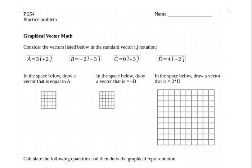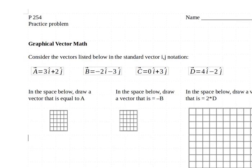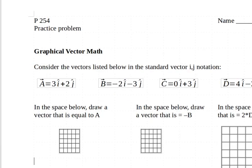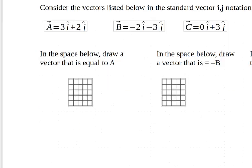I'm going to go ahead and make things a little bit zoomed in just so we can keep track of what's going on and focus on one area at a time. So we have our list of vectors up here. The first question that we have is in the space below, draw a vector that is equal to A.